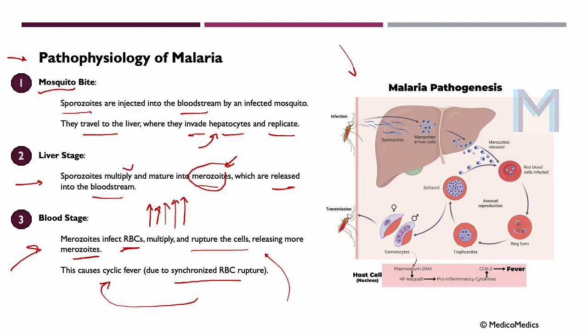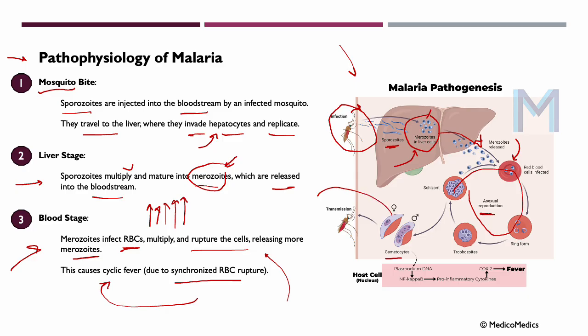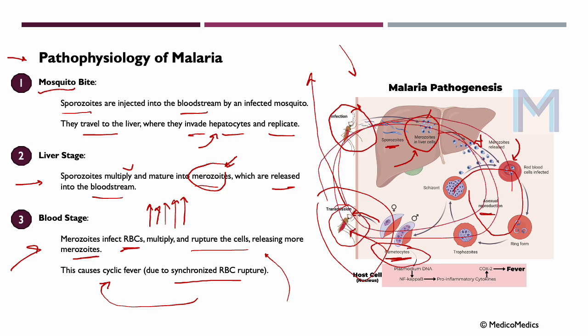As illustrated, the infected mosquito bites a human, releasing its sporozoites. These enter our liver cells, maturing into merozoites. The liver cell bursts and they are released into our bloodstream, then infect red blood cells, undergo asexual reproduction, and the cycle continues. Some of these merozoites develop further into gametocytes — both male and female forms — which circulate in our blood. When another mosquito bites this person, it ingests these gametocytes. Inside the mosquito, they fuse and mature, making the mosquito infected and able to spread malaria to someone else.